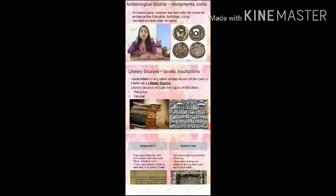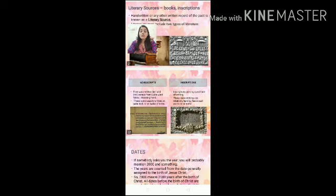Literary sources — any handwritten or written record of the past — are known as literary sources. Literary sources include books, manuscripts, and inscriptions. Literary sources include two types of literature: religious, which relates to a particular religion, and secular, which is not related to religion at all.